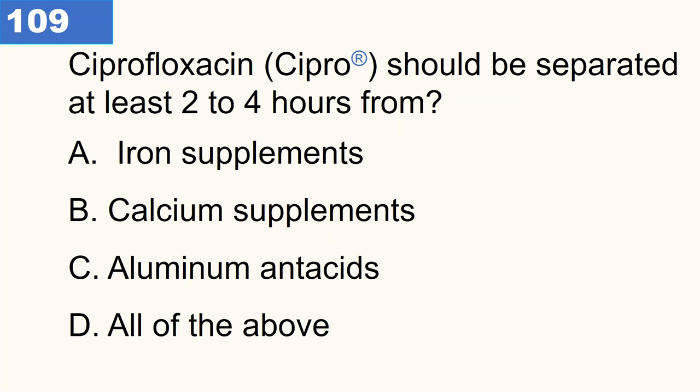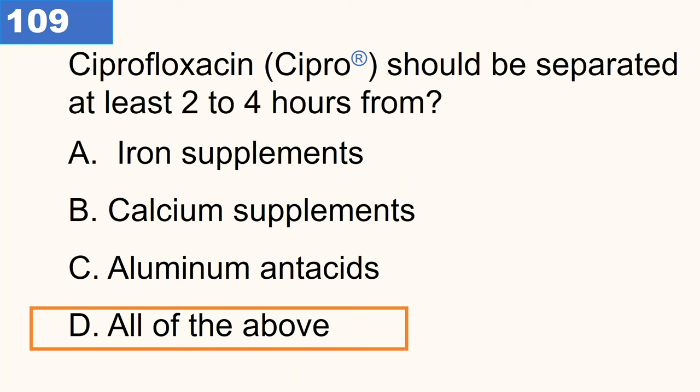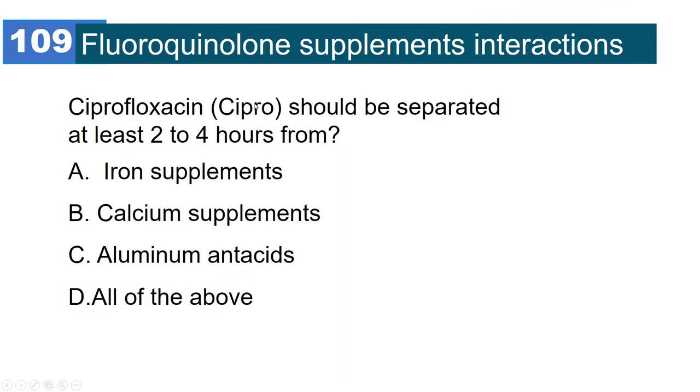Ciprofloxacin should be separated at least two to four hours from iron supplements, calcium supplements, and aluminum antacids. The answer is all of them. Supplements such as iron, calcium, aluminum, and magnesium all combine with ciprofloxacin and reduce the absorption of the drug, so you must separate administration by two to four hours.